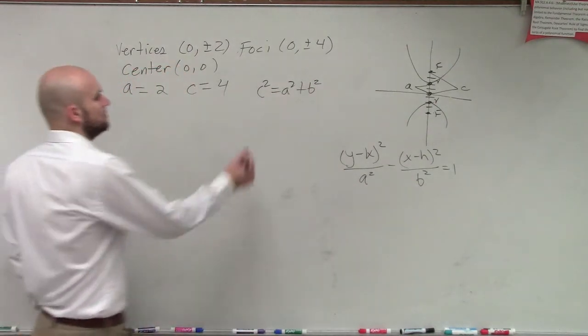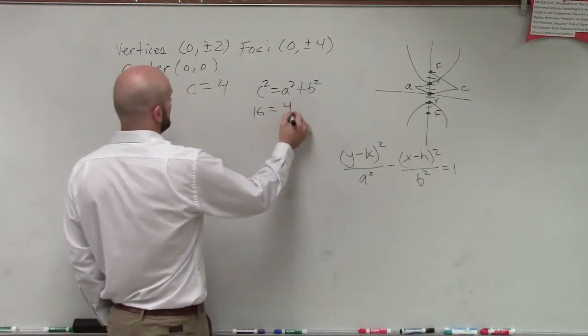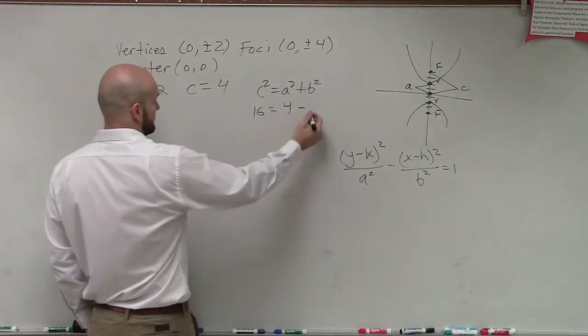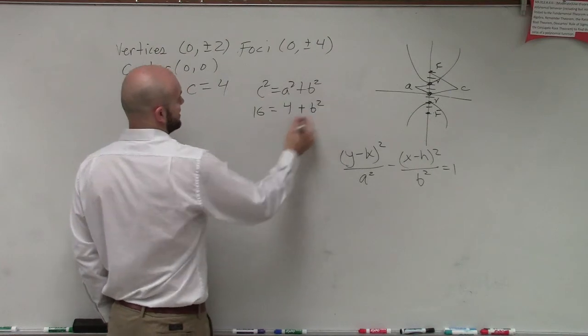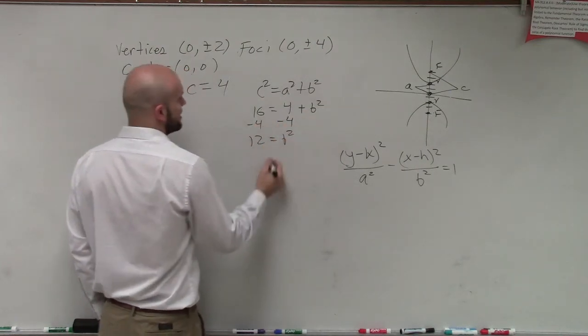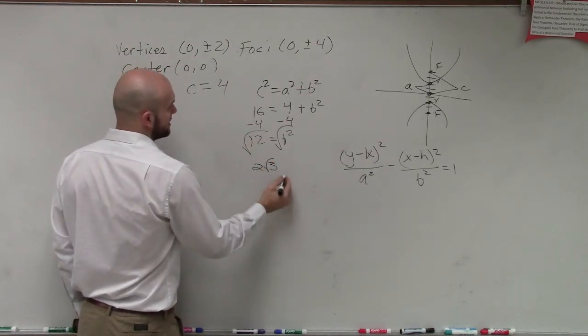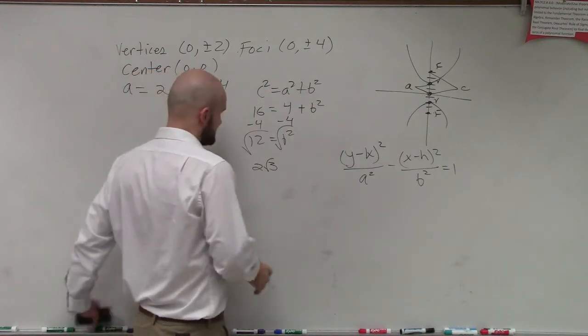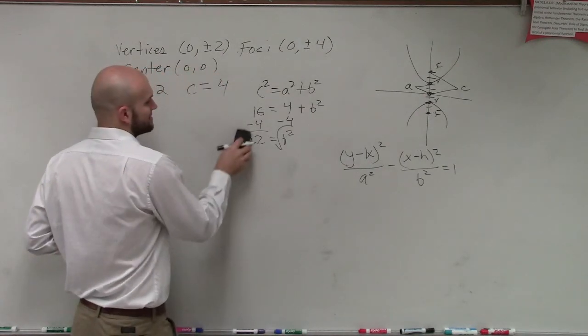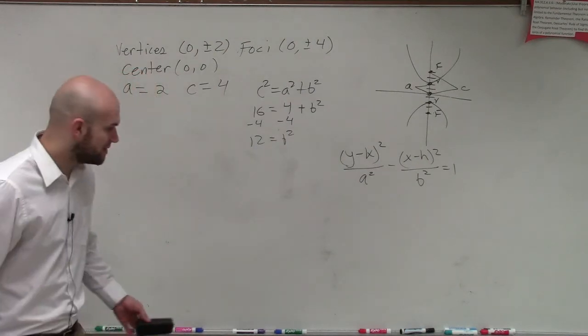So now we have 16 = a², which is 4, plus b². Minus 4, minus 4, 12 = b². Take the root, take the root. We could say this is going to be 2 radical 3. I'm sorry, we just need to know what b² is. Let's get into that solving mentality. So b² equals 12.